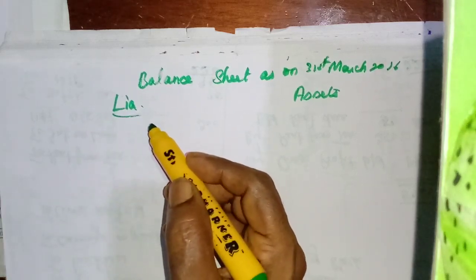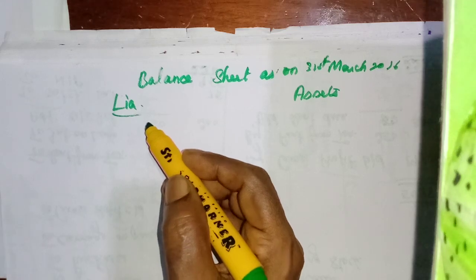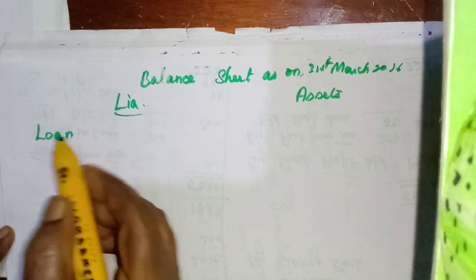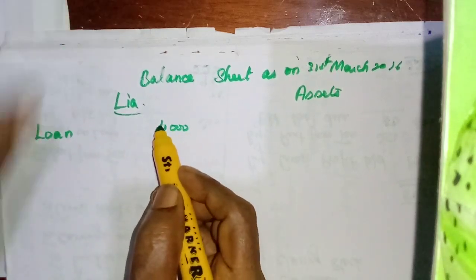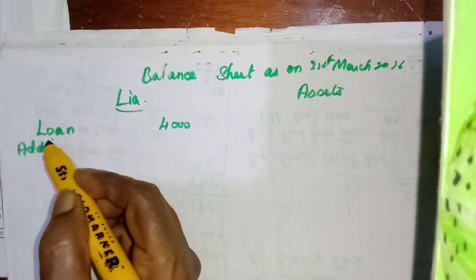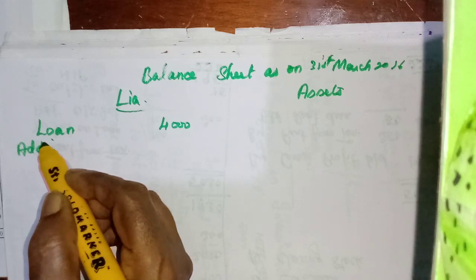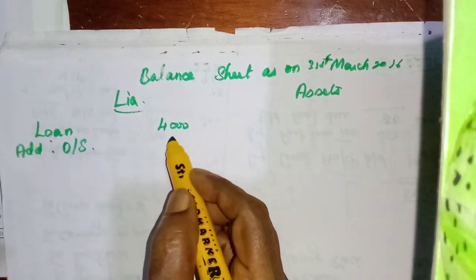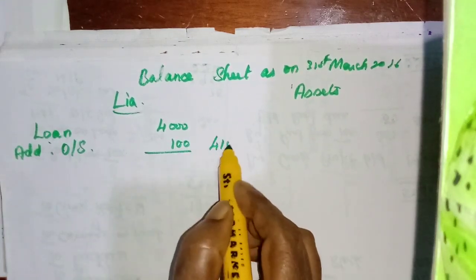From the first item: opening stock, purchases, sales — 10% loan: write Loan 4,000. Then adjustment 1 — Interest on Loan Outstanding, 6 months interest = 100. Total 4,100.